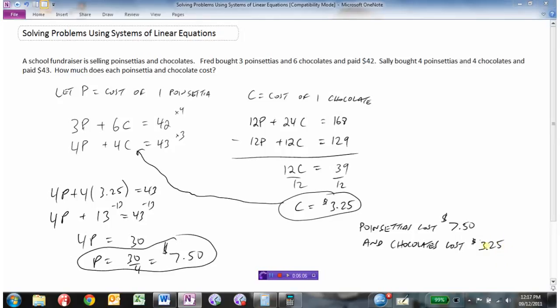In this situation, if this was a quiz I would always go back and check my answer and make sure that 3 poinsettias and 6 chocolates is $42 and that 4 poinsettias and 4 chocolates would cost $43. So there's one word problem where the elimination method would be the quickest way to solve.